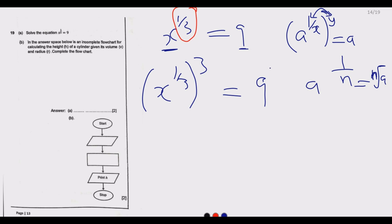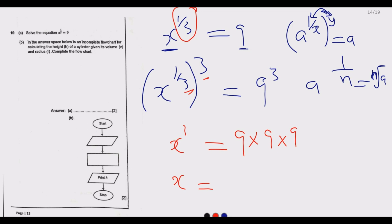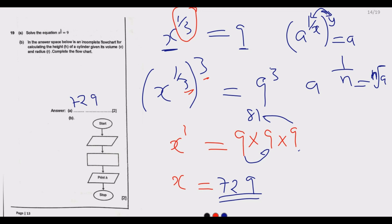Multiplying 1 over 3 by 3 gives 1, so we get x to the power 1 equals 9 to the power 3. That means 9 times 9 times 9: 9 times 9 is 81, and 81 times 9 is 729. So x equals 729.